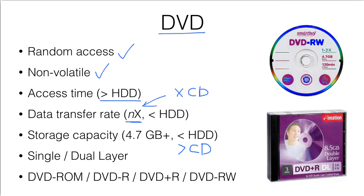A DVD-ROM or DVD has a bigger storage capacity than a compact disk. A typical storage will be 4.7 gigabytes of data. A DVD can also support single or dual layer, or even double-sided, and for each layer the storage capacity is about 4.7 gigabytes.